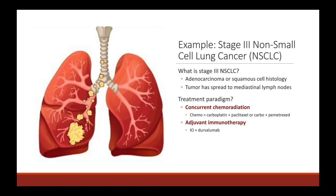The next example is stage three non-small cell lung cancer. Stage three refers to the fact that the tumor has spread to the mediastinal lymph nodes — lymph nodes in the center of the chest. We can't safely resect these because that would involve removing the entire lung, and it wouldn't even be possible because they're in the central airway. The treatment paradigm for stage three non-small cell lung cancer involves concurrent chemotherapy and radiation, followed by adjuvant immunotherapy — adding an additional therapy after our primary concurrent chemo radiation.